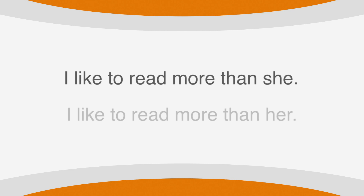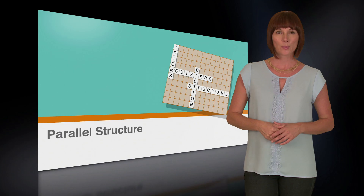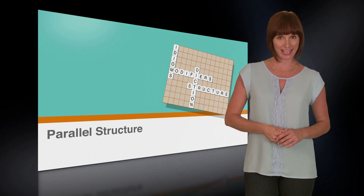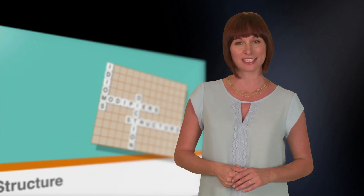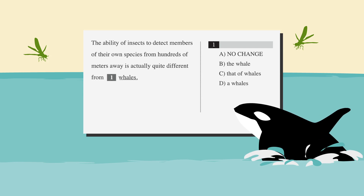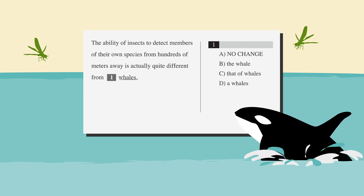So our correct comparative sentence structure is: I like to read more than she. One of the more prevalent types of parallel structure questions you'll see on the SAT is the comparison of like things. Let's check out a sample problem: The ability of insects to detect members of their own species from hundreds of meters away is actually quite different from whales. We know that the comparison isn't accurate as is, because it's comparing the ability of insects to the entire species of whales. We're talking about the abilities of a species here, not the actual species. So answer choice A is wrong.